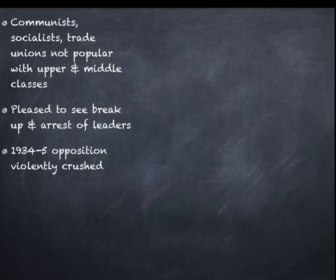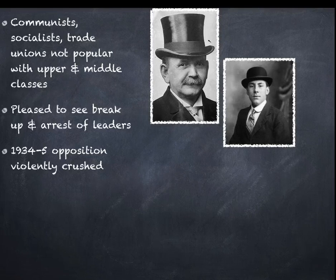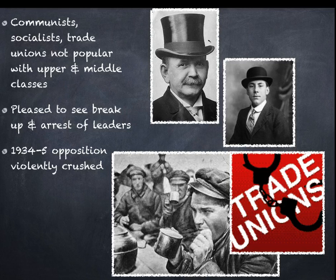So what did the Nazis do with those groups? In terms of people like the communists, the socialists, the trade unions, these were not popular with the upper classes or the middle classes. So they were actually quite pleased to see the breakup and arrest of communist leaders and the breakup of trade unions. Back in the Weimar period, big industries had struggled to make profits because trade unions had encouraged strike action and extra pay. So they were quite happy to see the breakup of the trade unions.